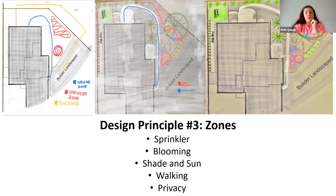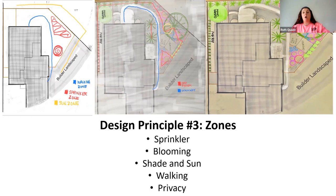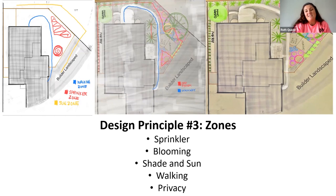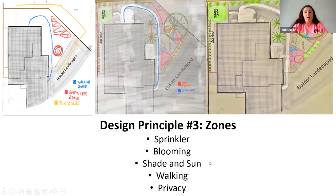With zones, you also have your blooming zones. In the landscape I showed you, something was blooming consistently even in winter — a lot of winter interest. You have your blooming zones, which can also be communicated in the design. Know your sun and shade zones — know where they are. Know your walking zones, and where do you want privacy?